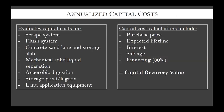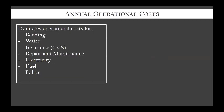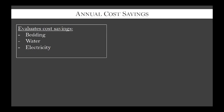We've evaluated capital costs for different processes: scrape system, flush system, sand recovery, mechanical solid-liquid separation, anaerobic digestion, storage and treatment ponds or lagoons, and land application. These capital costs are annualized accounting for purchase price, expected equipment lifetime, interest, salvage, and financing - currently set at an assumed 80 percent. Operational costs include bedding, water, insurance, repair and maintenance, electricity, fuel, and labor. Cost savings include recycled bedding sand or organic bedding, recycled water, and electricity generated and used on farm.